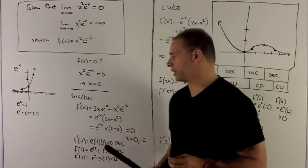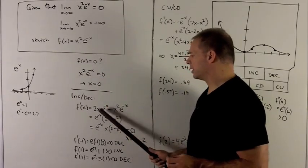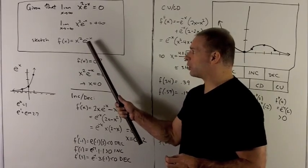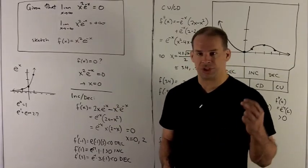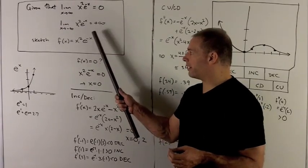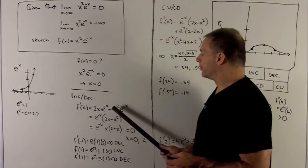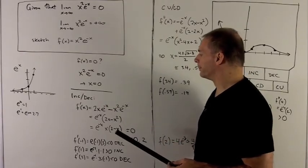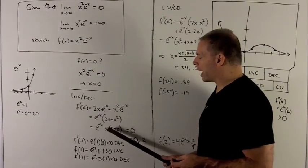Next, we're going to look at increasing and decreasing, so we're going to compute the derivative using the product rule. Derivative of the first is 2x, times the second e^(-x), plus the first x² times the derivative of the second. The derivative of e^(-x) uses the chain rule: e^u with u = -x gives -e^(-x). Factoring out e^(-x) leaves 2x - x², or x(2 - x).